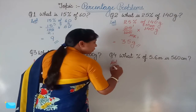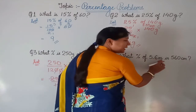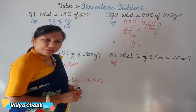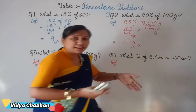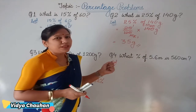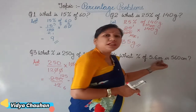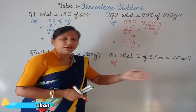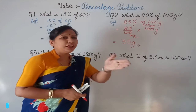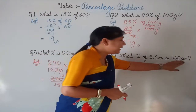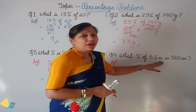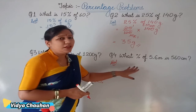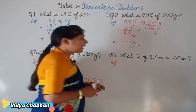The question says: what percent of 5.6 meters is 560 centimeters? Suppose you have a cloth piece of 5.6 meters and 560 centimeters of cloth is cut out from it. We need to find what percent of the cloth piece has been cut out.